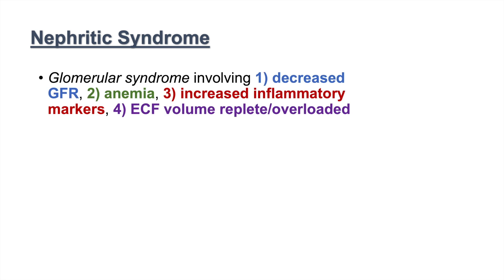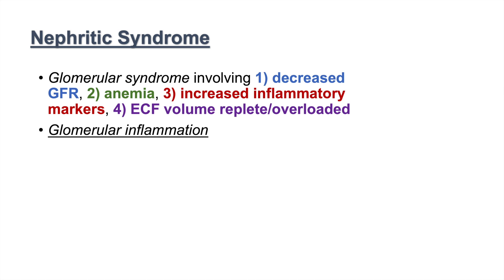In this lesson we're going to talk about nephritic syndrome. Nephritic syndrome is a glomerular syndrome involving four different things: a decreased GFR (glomerular filtration rate), it is associated with anemia, it is associated with increased inflammatory markers, and it has an ECF (extracellular fluid volume) that is overloaded. Nephritic syndrome is due to glomerular inflammation, so it is a glomerulonephritis.